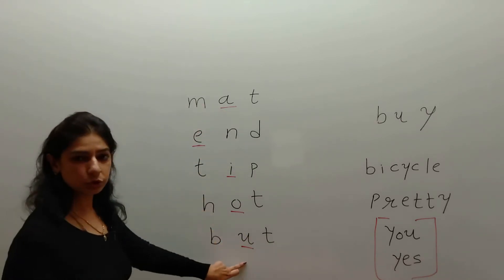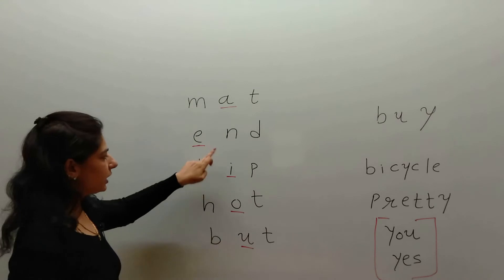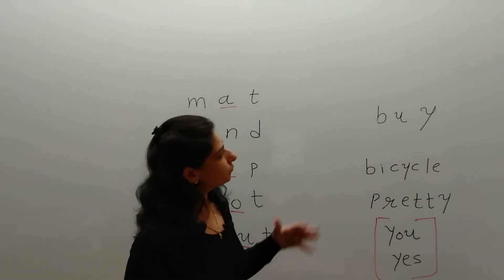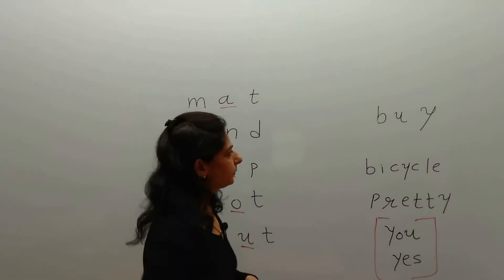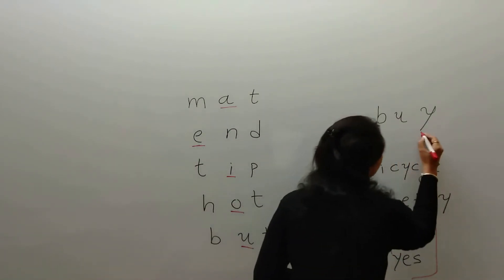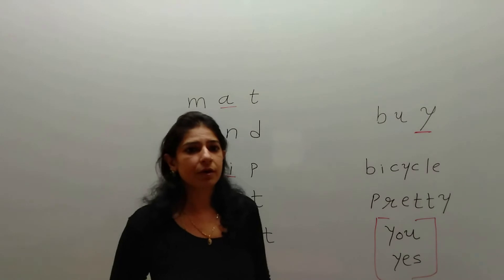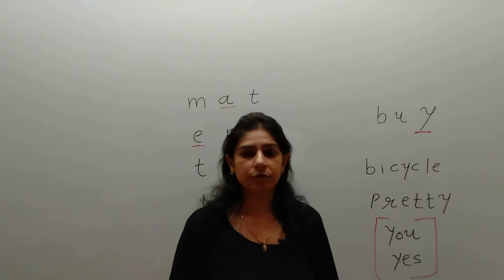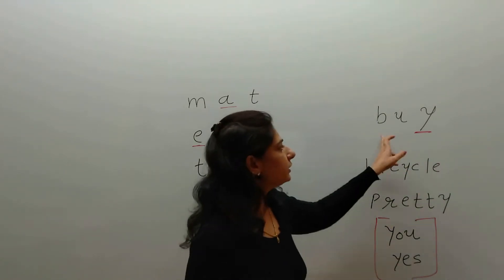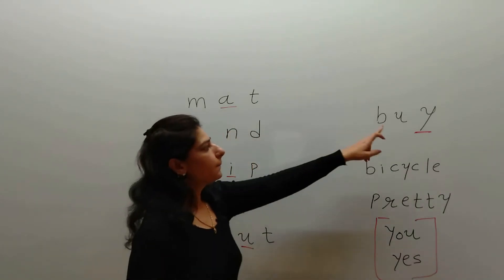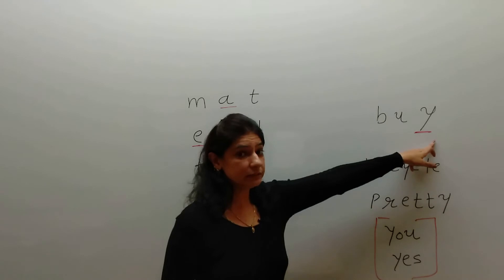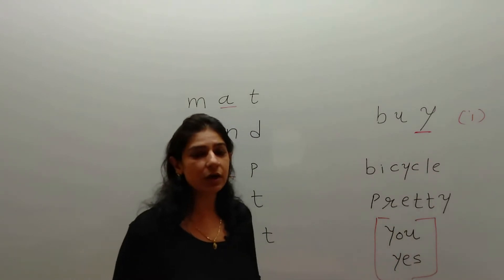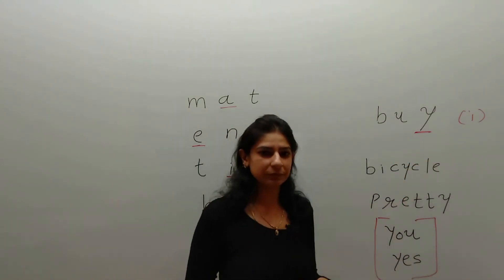A, E, I, O, U are our main vowels. Now let's talk about Y, the special vowel. Y is special because sometimes it acts as a consonant and sometimes as a vowel. When we say 'bye,' Y sounds like I, so it is a vowel.